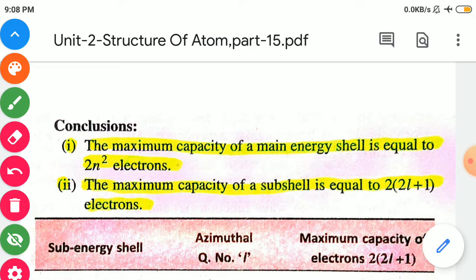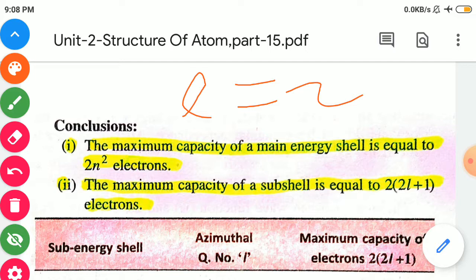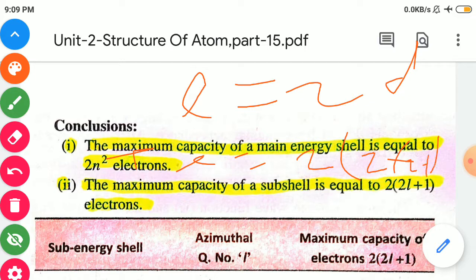The second conclusion: the maximum capacity of a sub-shell equals 2(2l plus 1) electrons. For example, if l equal to 2 (d sub-shell), total electrons equals 2 into (2 times 2 plus 1) equals 2 into 5 equals 10. So the d sub-shell holds a maximum of 10 electrons. Similarly, we can calculate for s, p, d, and f sub-shells.